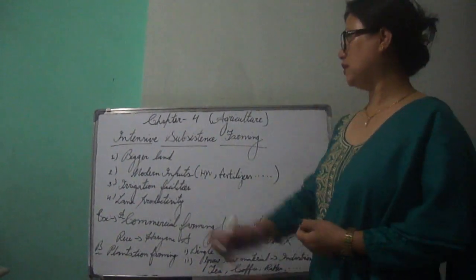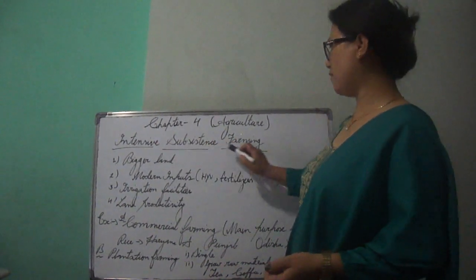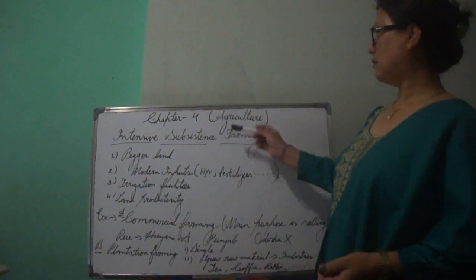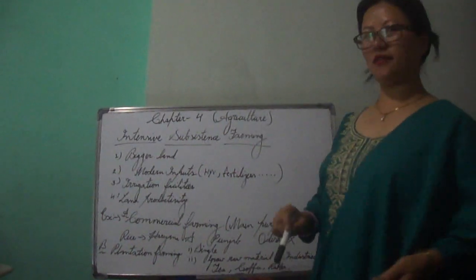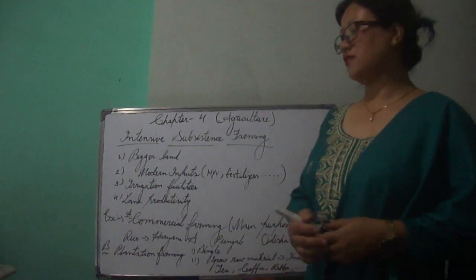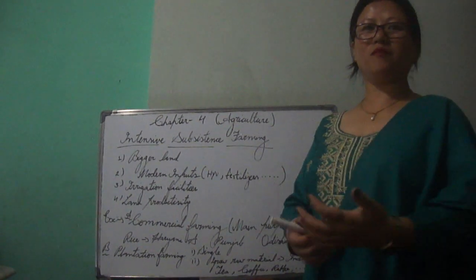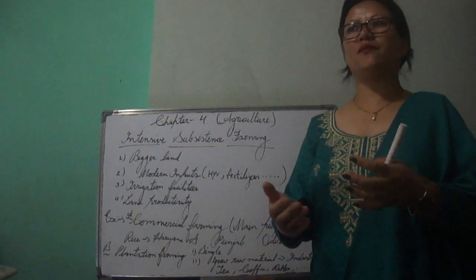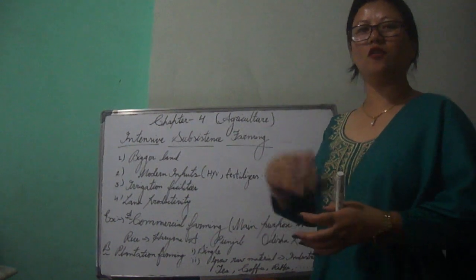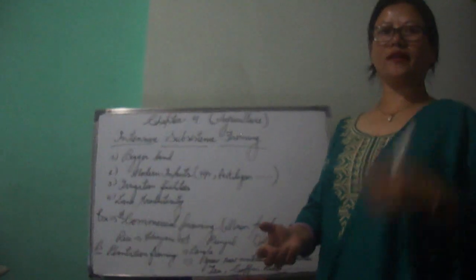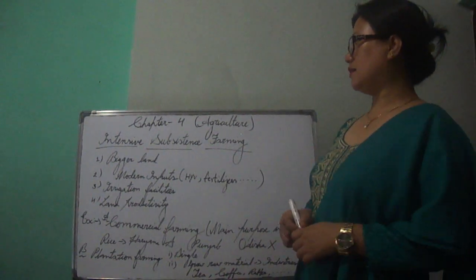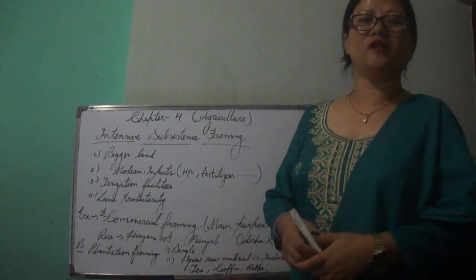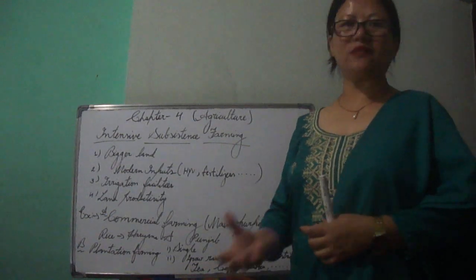Today we are going to discuss intensive subsistence farming under Chapter 4 of Grade 10 geography — the chapter on agriculture. In our previous topic we discussed primitive subsistence farming, where all primitive ways were used. In contrast, intensive subsistence farming is a technique where a farmer uses all modern inputs to get maximum production.